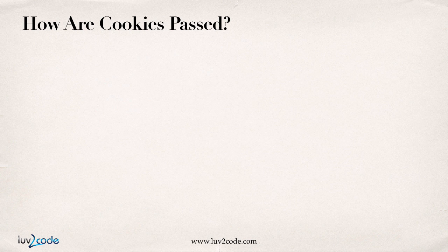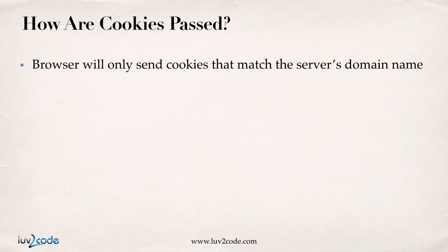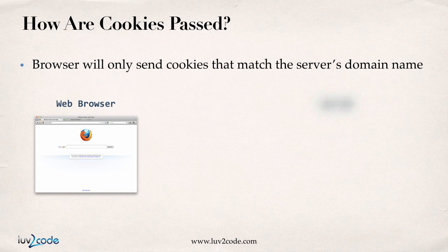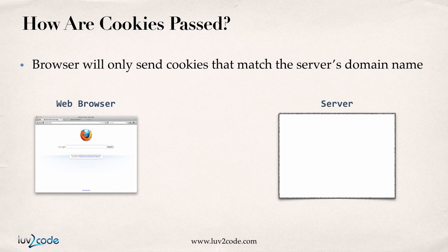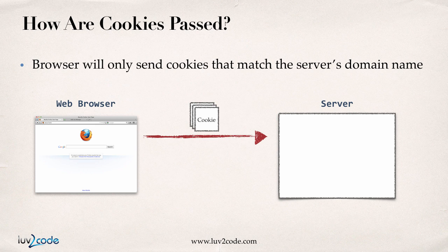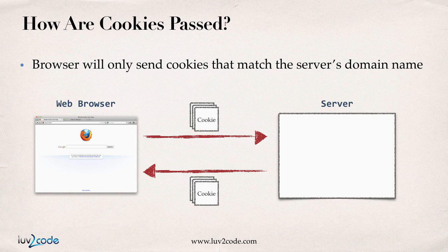How are cookies passed back and forth? When the browser connects to the server, it will only send cookies that match that server's domain. For example, when I connect to Expedia.com, it will only send over cookies from Expedia.com. Likewise, if I connect to CNN.com, the browser would only send cookies set by CNN.com — it won't send Expedia cookies to CNN. They match on the actual domain name and the given path of the application, so there are no security issues.